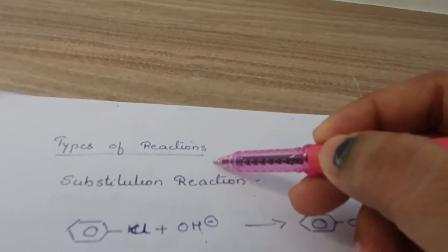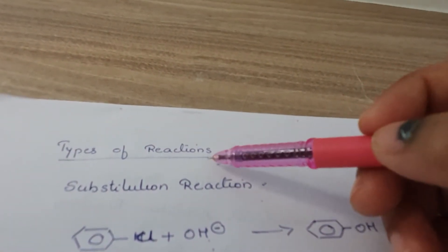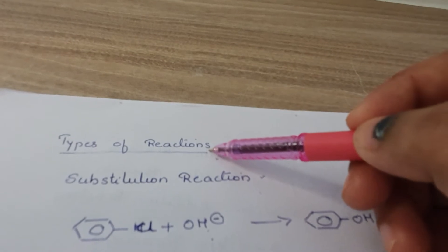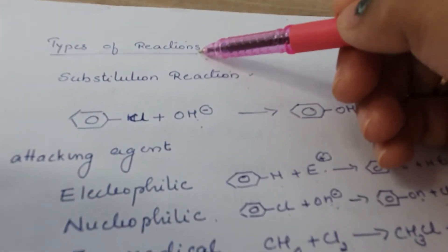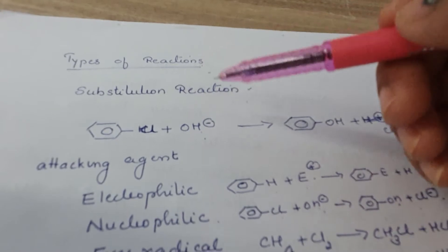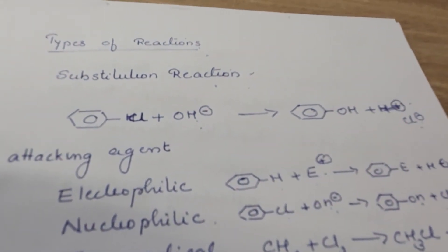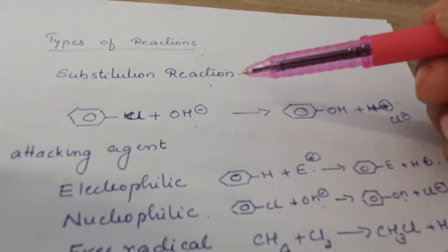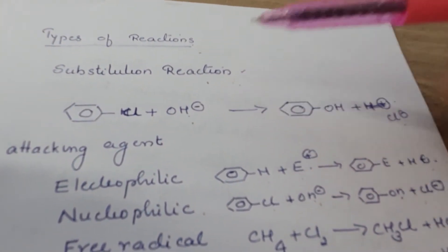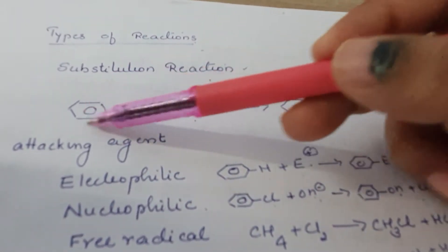The topic we were discussing is the type of reaction. A reaction is a process where a reactant is converted to a product. It can happen by substitution, elimination, or other methods. We have seen substitution reaction — what is a substitution reaction?